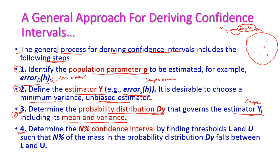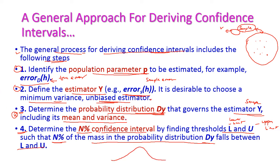The last step is to determine the n-percent confidence interval by defining the thresholds — lower bound l to upper bound u — such that n percent of the mass in the probability distribution dy falls between l and u. For example, if this is a bell curve, the probability should lie between l and u within that range.